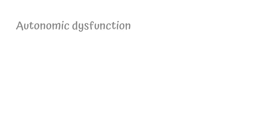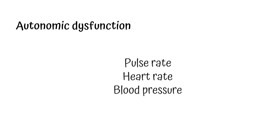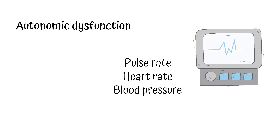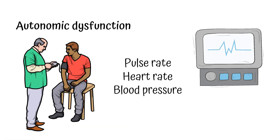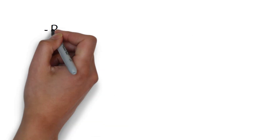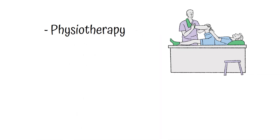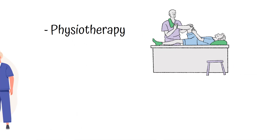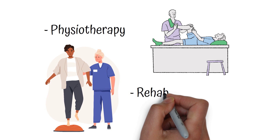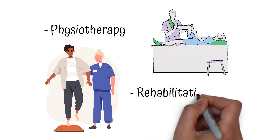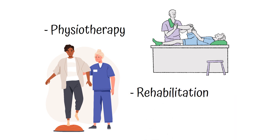For autonomic dysfunction, pulse rate, heart rate, and blood pressure should be monitored. Physiotherapy for patients with Guillain-Barré syndrome should be started early in the course of the disease, and rehabilitation should be started as soon as the patient begins improving.